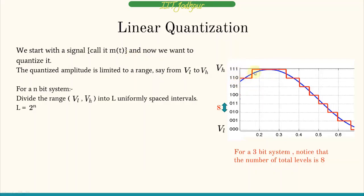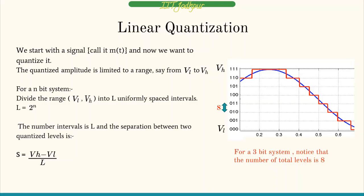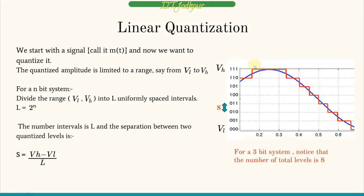Let us look at linear quantization. We start with the analog signal M(t) and quantize it. The input signal is limited from VL at minimum to VH at maximum. For an N-bit system, we divide this range into L uniformly spaced intervals where L equals 2 to the power N. For example, 2 bits gives 4 levels; 3 bits gives 8 levels. The step size — the separation between two quantized levels — is given by (VH − VL) / L.